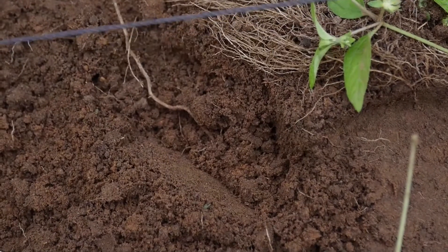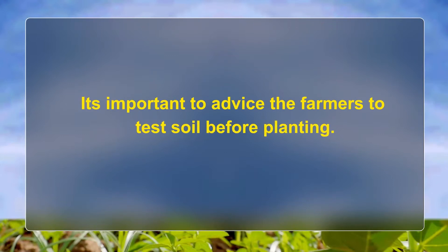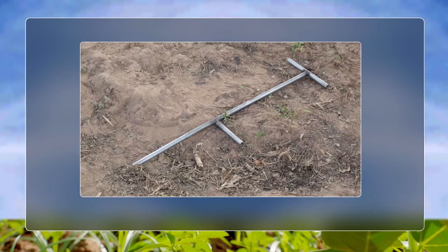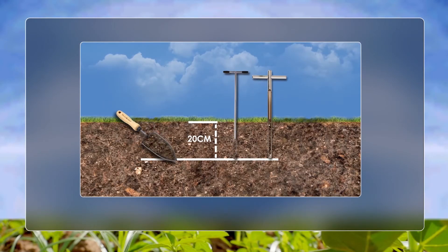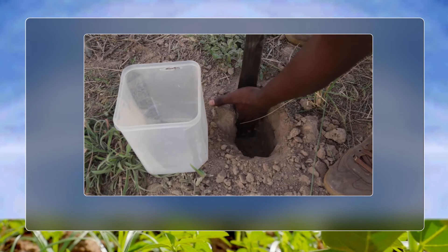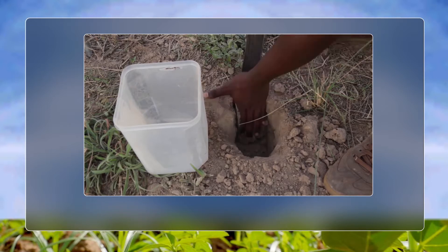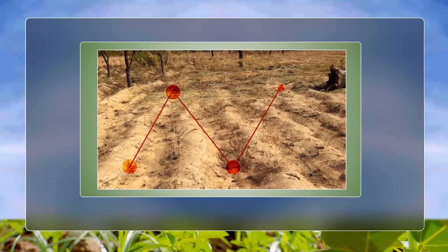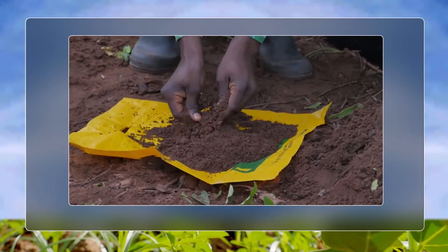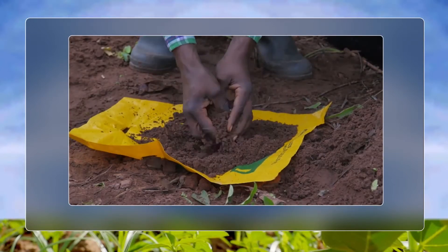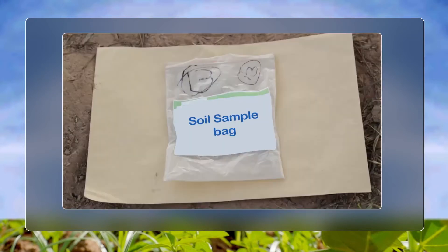Soil testing. It's important to advise farmers to test soil before planting. You will need an auger or a cutlass to dig 20 cm deep into the soil. Farmers can measure 20 cm from the tip of the fingers to the wrist of an adult hand. Samples should be taken in a zigzag pattern over the whole field area to get a good sample. Remember to pick out debris from your sample and pour it into an envelope.